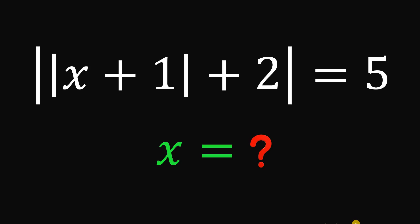Today, we will answer a math challenge given by one of our followers. The question goes like this: given the equation, the absolute value of the absolute value of x plus 1, plus 2, equals 5, the goal is to find all possible values of x that satisfy this equation.